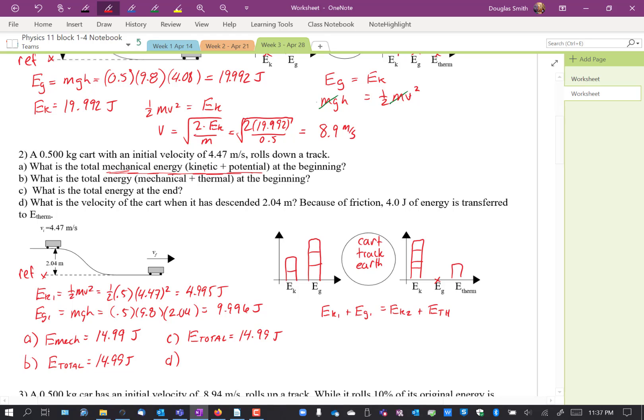So we know this, we know this, we know this, we're going to get that. So EK2 is E-mechanical minus E-therm, because these two put together is the mechanical. So that is equal to 14.99 minus 4, 10.99 joules.